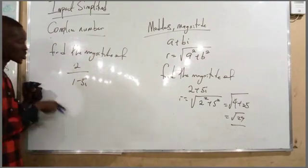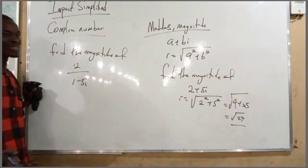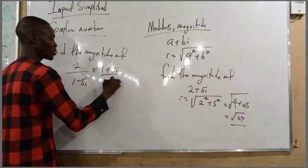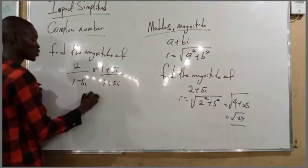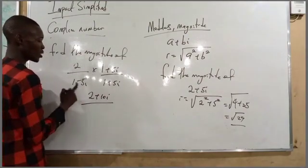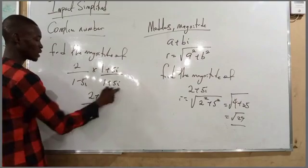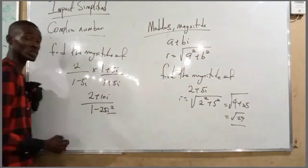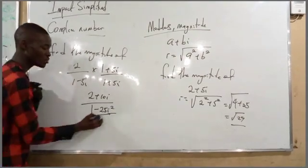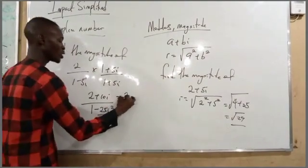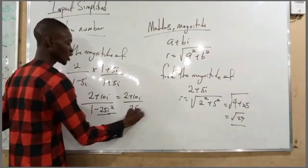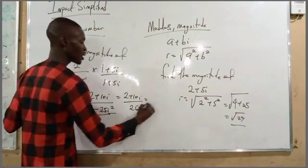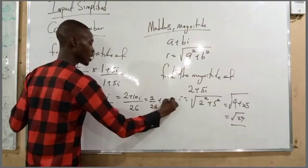Expanding the numerator: 2 times (1 plus 5i) gives 2 plus 10i. The denominator: 1 times 1 is 1, and minus 25i² becomes plus 25 since i² equals minus 1. So 1 plus 25 equals 26. The result is (2 plus 10i) over 26, which splits into 2 over 26 plus 10i over 26.